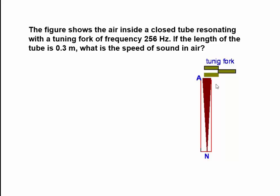Therefore, what is a full wavelength? It's four times 0.3 meters, that is 1.2 meters. The speed of a wave is frequency multiplied by wavelength.